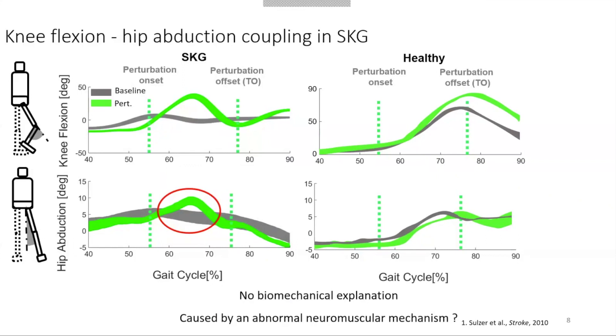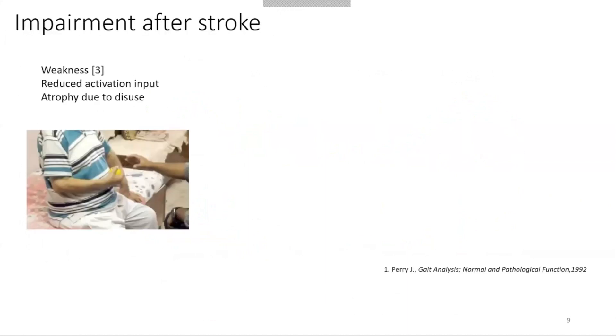We hypothesized it should be originated by an abnormal neuromuscular mechanism specific to stiff knee gait. Taking a step back and going into these different abnormal neuromuscular mechanisms or impairments after stroke, we can categorize them in three different categories. The first would be muscle weakness, which could be observed in two ways: due to decreased activation input from neural pathways at the initial stage of stroke, or as muscle atrophy due to disuse of muscle over a long period of time, which is prominent in the chronic stage.